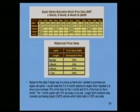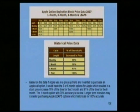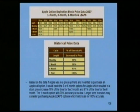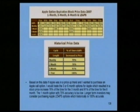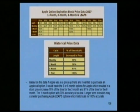Looking at 60 months of data on a monthly basis, Apple stock closed up 70% of the time on option expiration day. With the three-month cycle, it closed up 76% of the time. On a six-month cycle, it closed up 91% of the time, and on a one-year cycle, it closed up 100% of the time.